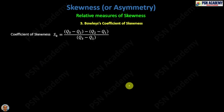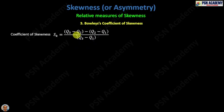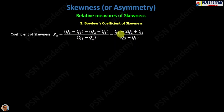Bowley's coefficient of skewness, denoted S_k, utilizes the concept of quartiles. Q3 is the third quartile, Q2 is the second quartile. The formula Bowley has suggested simplifies to: Q3 minus 2·Q2 plus Q1, divided by Q3 minus Q1.